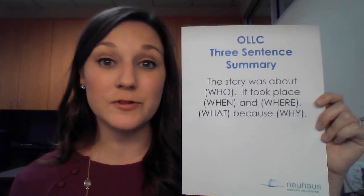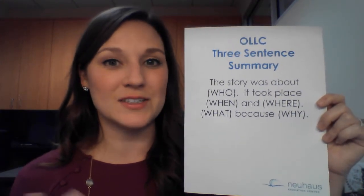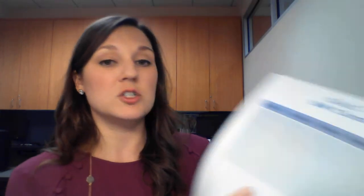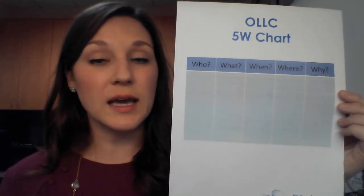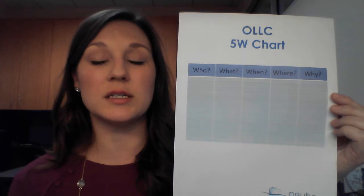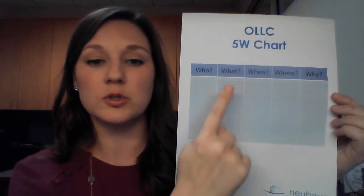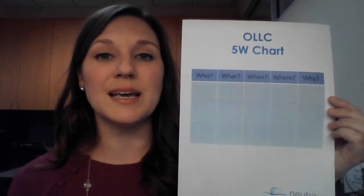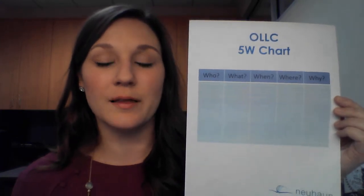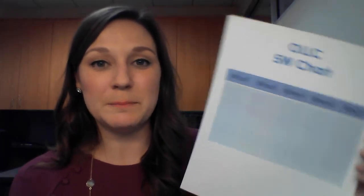You can have students do that orally first and then they can even take it into writing. Another way you might want students to organize their thinking for this five W card activity is a chart. You could do this together where you are the scribe, or each student does it, or they work in pairs — again, just answering those questions: who, what, when, where, why. This would help them take their answers into writing before they do a three-sentence summary.